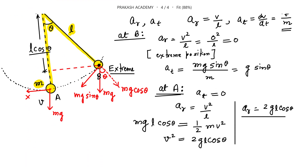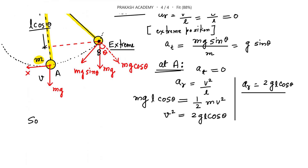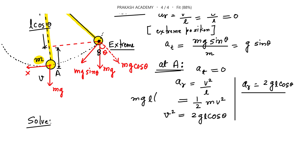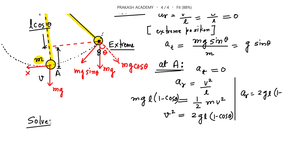Let us correct a mistake made earlier. H is the loss in height, which is L − L·cosθ, not L·cosθ. So the potential energy equation should be MgL(1 − cosθ) = ½MV², giving V² = 2gL(1 − cosθ). Therefore, the corrected radial acceleration at point A is 2g(1 − cosθ).